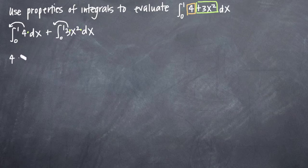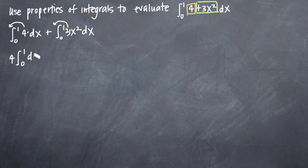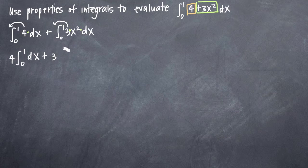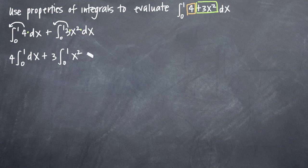So to simplify, we'll pull 4 out in front and we'll get 4 times the integral from 0 to 1 of dx plus, pulling our 3 out in front, 3 times the integral from 0 to 1 of x squared dx.